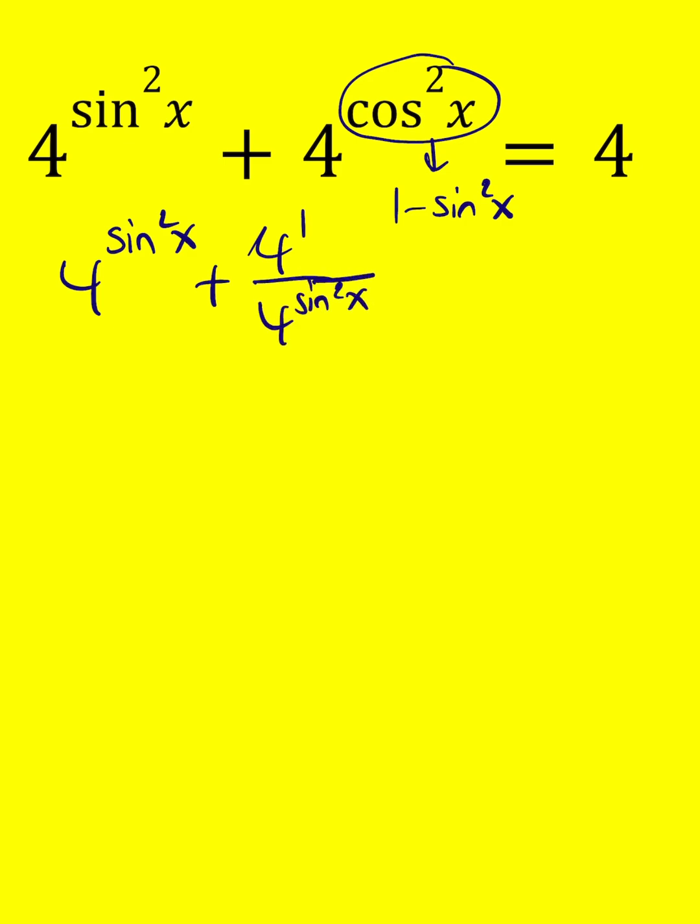But I can write it as 4 to the 1 divided by 4 to the power sine squared, because when you divide exponents with the same base, you subtract the exponents and you can also go backwards. Now, this is equal to 4.